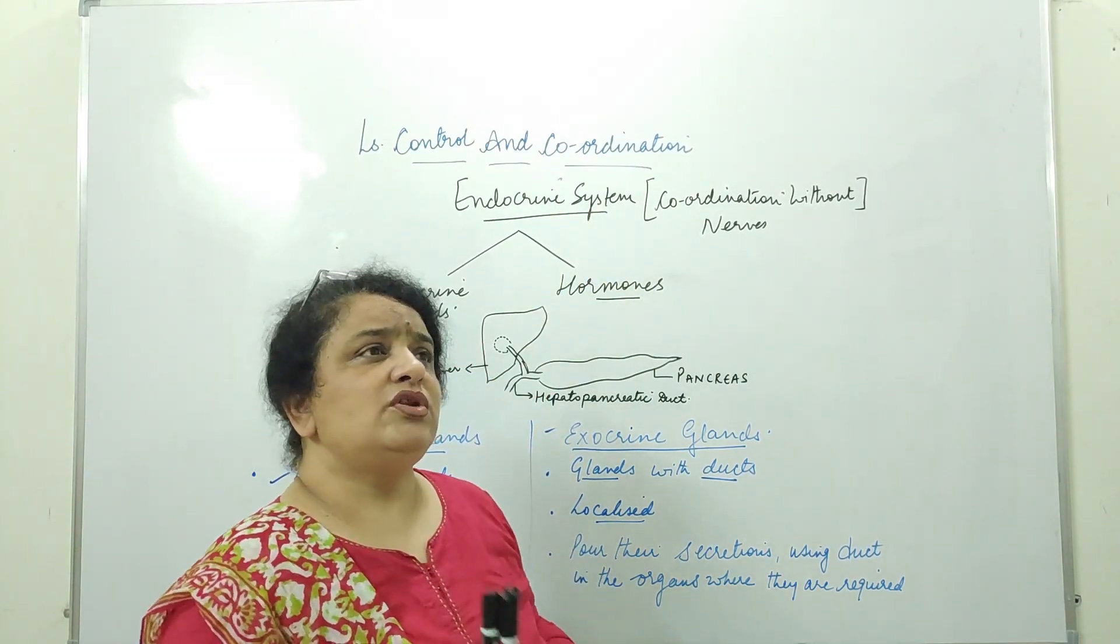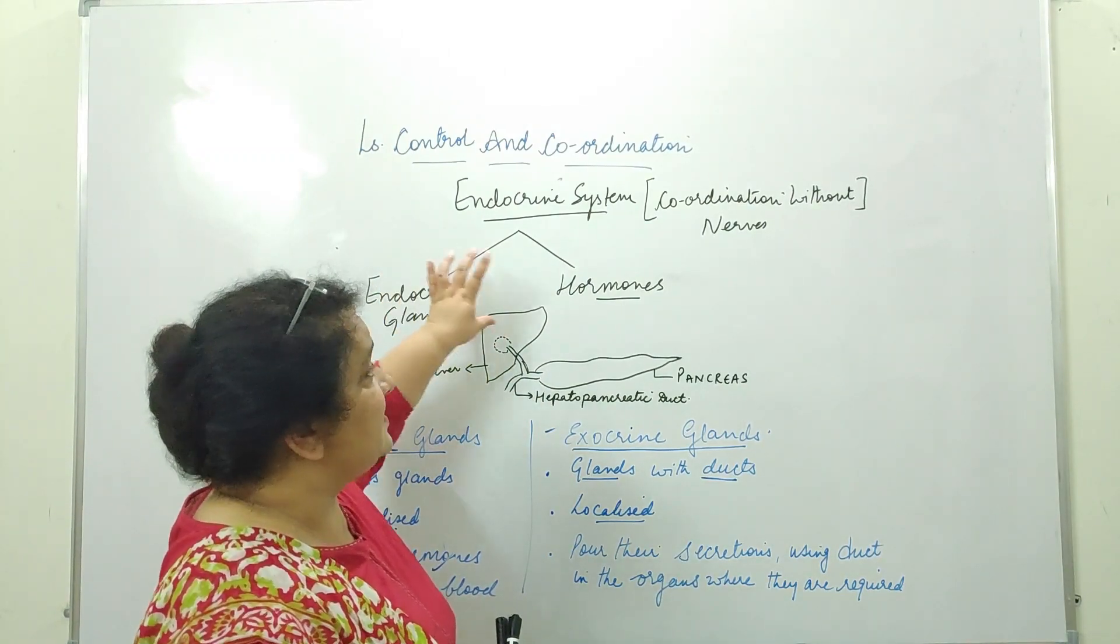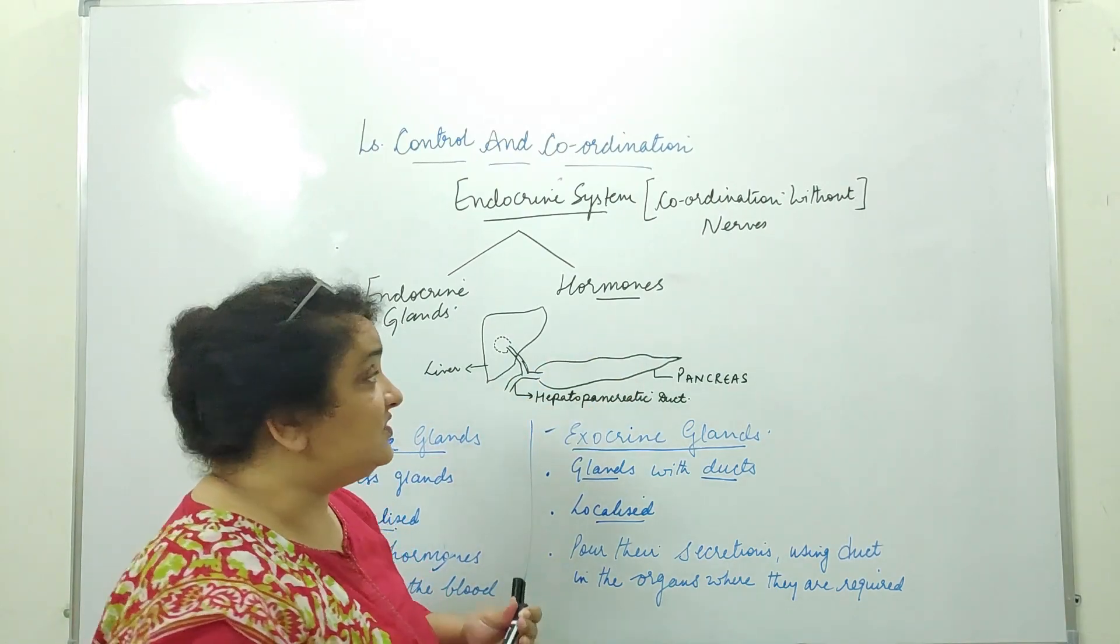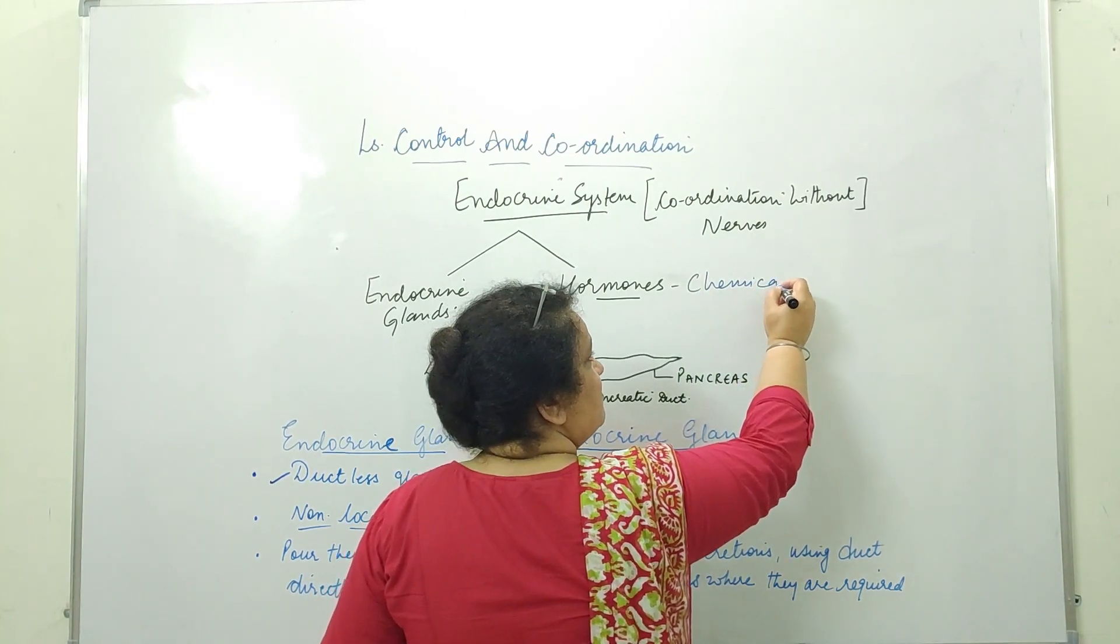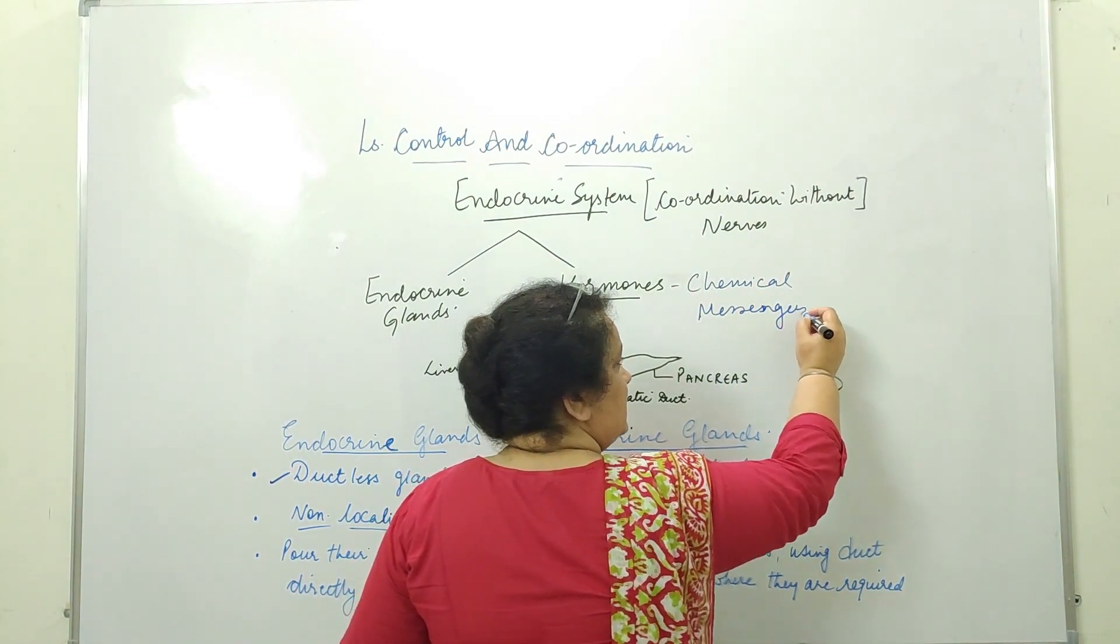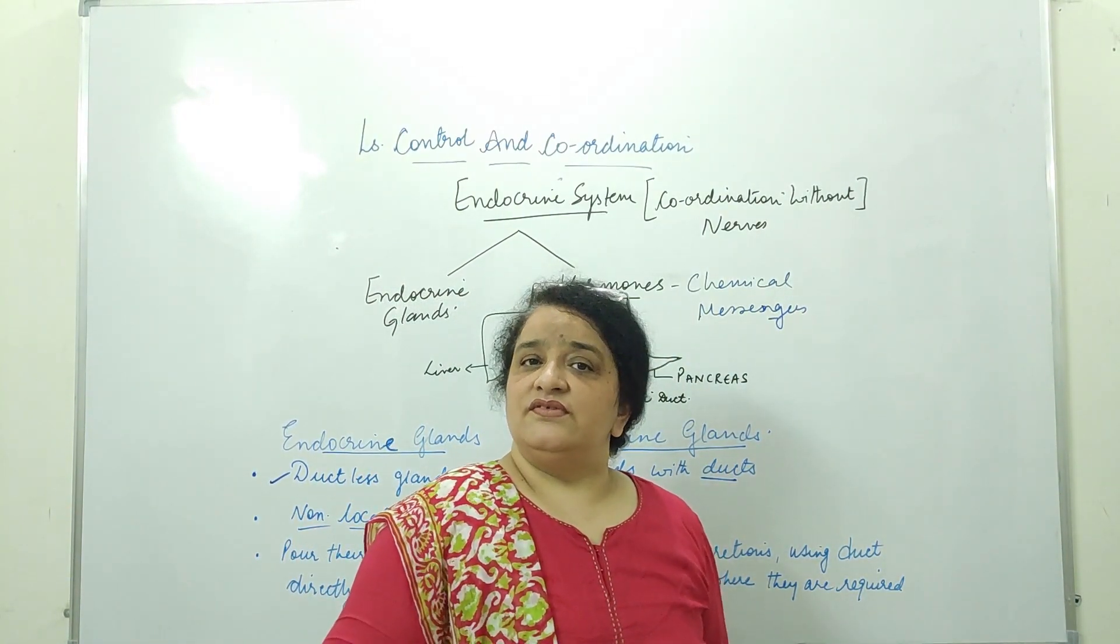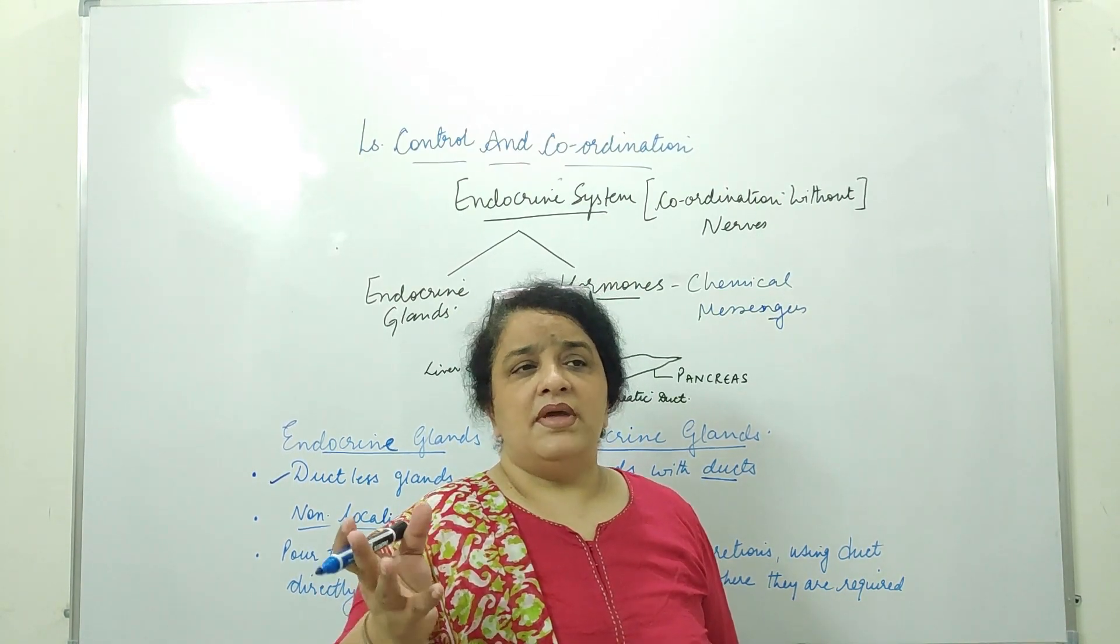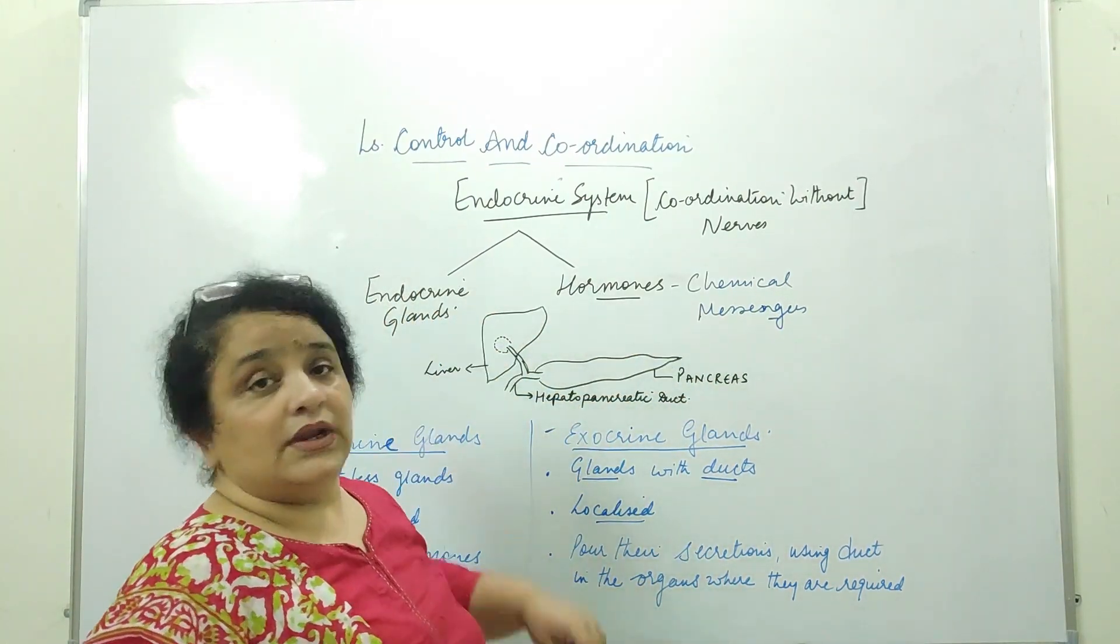And endocrine system, what is it? It is a system that consists of endocrine glands and hormones. Hormones are very important chemical messengers which control many functions of the human body like reproduction, growth, many metabolic activities. So they are secreted by endocrine glands.